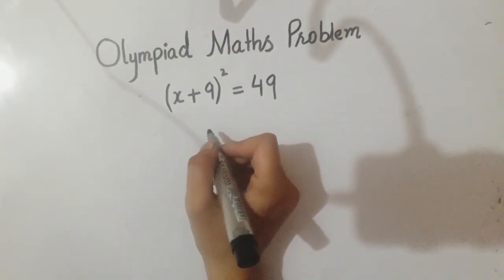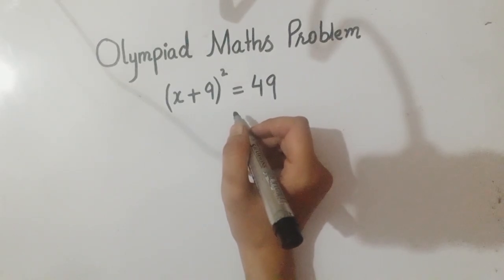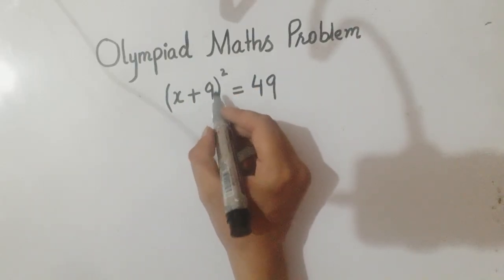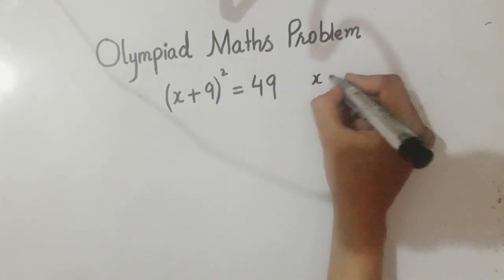Welcome back to math solver 1117 where math becomes easy and fun. In today's video I will solve an Olympiad math problem: (x+9)² = 49. You have to find the value of x.